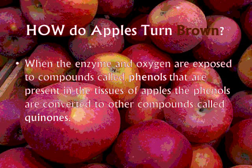Once you cut the fruit, you open some of the cells. The enzyme then has access to oxygen in the air and it does its thing, turning the fruit brown. This is the same thing that causes brown spots in apples when you drop them. The easiest way to prevent browning is to put the sliced apples in water so that the enzyme does not have access to oxygen.